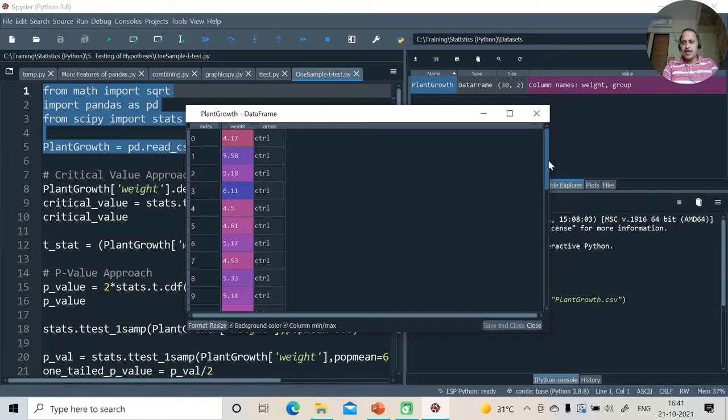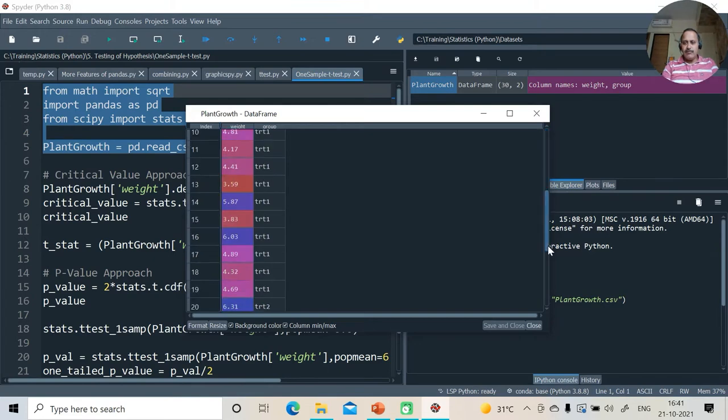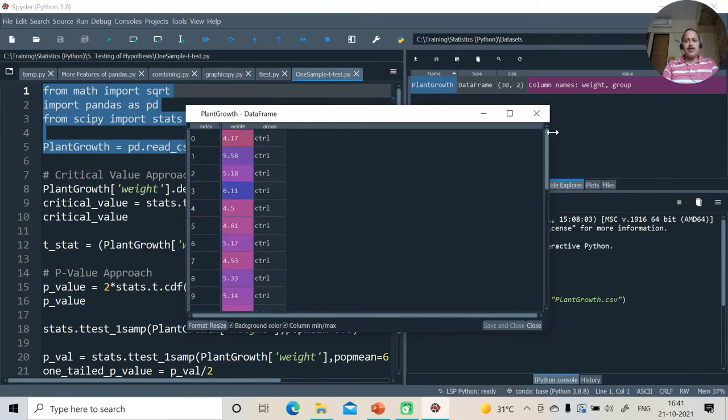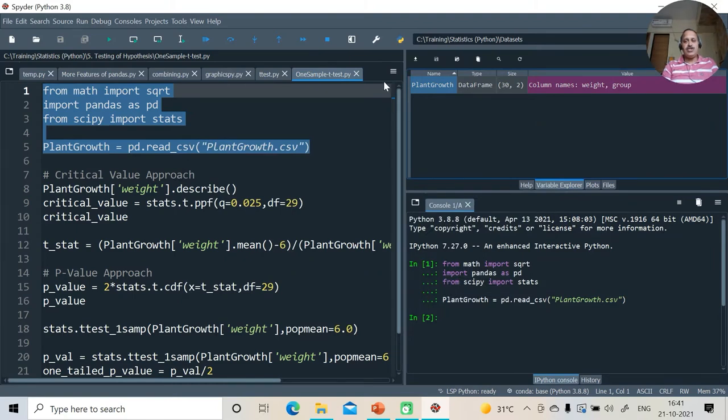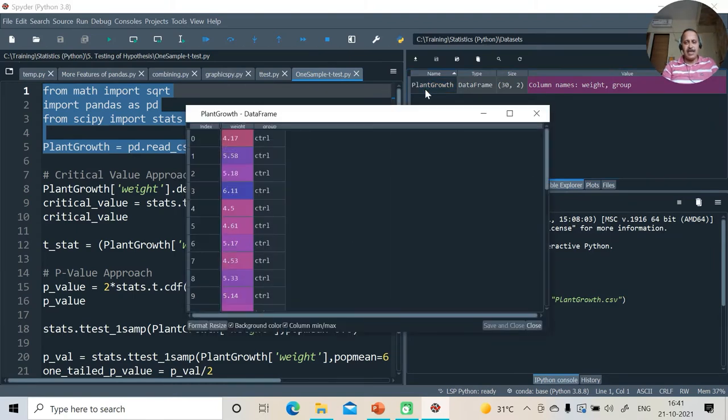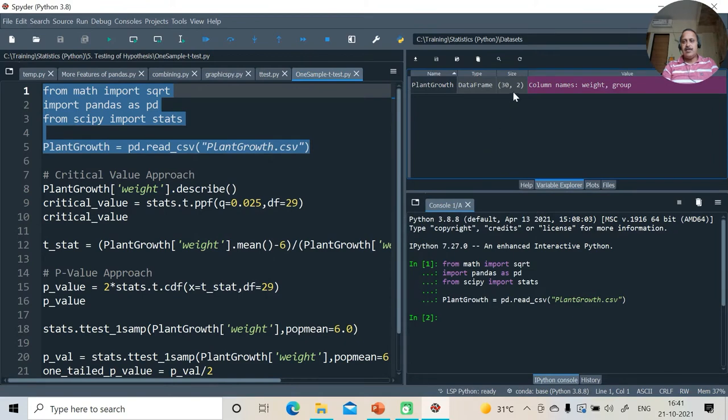This is basically a sample. This sample is of size 30. Our hypothesis is that the mean of the population from which this sample is drawn is some number.